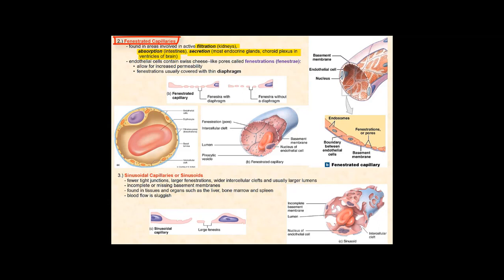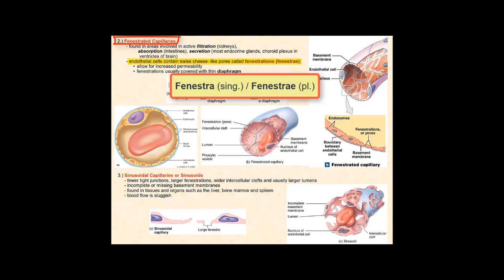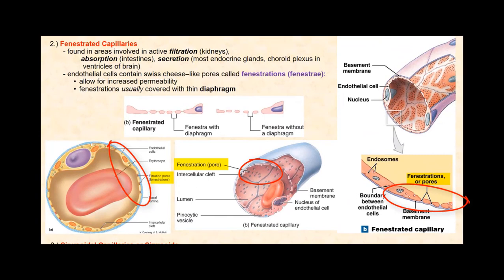In addition to intercellular clefts found between the endothelial cells, fenestrated capillaries have pore-like structures called fenestrations or fenestri. These fenestrations penetrate through the endothelial cell, so they are unlike the intercellular clefts that are found between the endothelial cells. Imagine that you have a slice of Swiss cheese — the cheese is the endothelial cell, which is simple squamous epithelium, while the pores or holes throughout the slice of cheese are the fenestrations or fenestri.